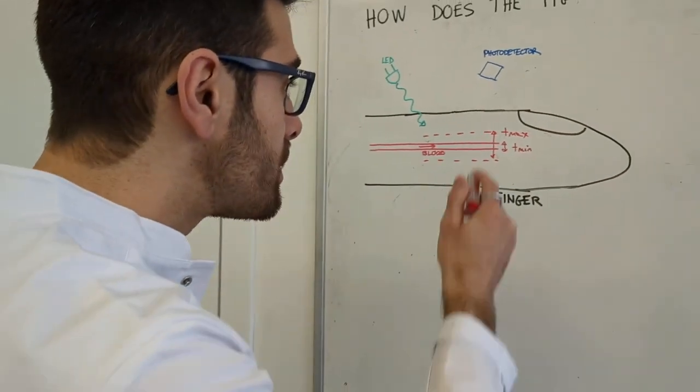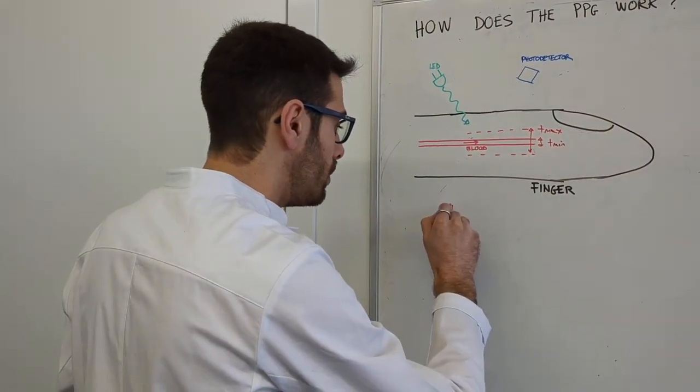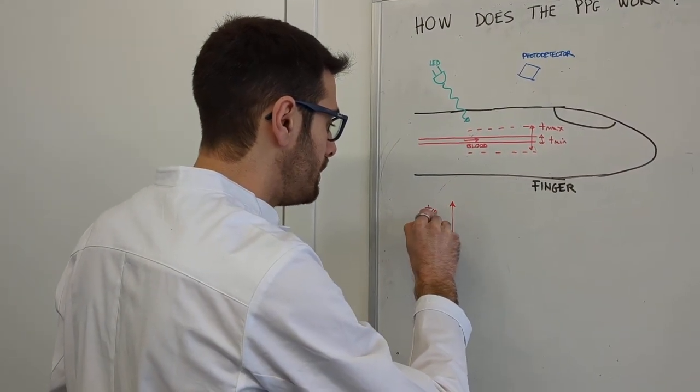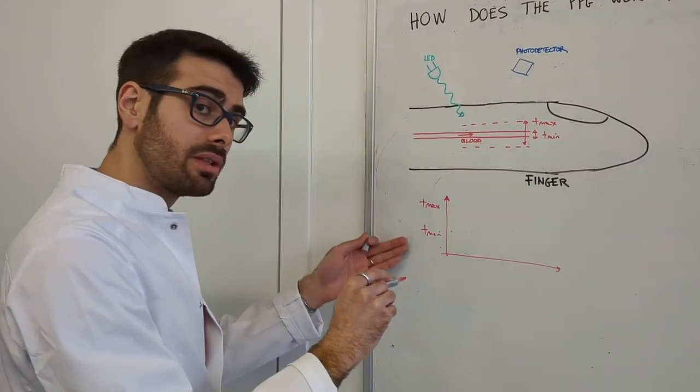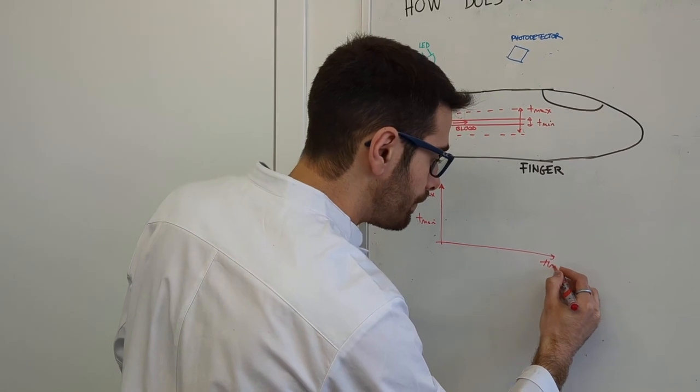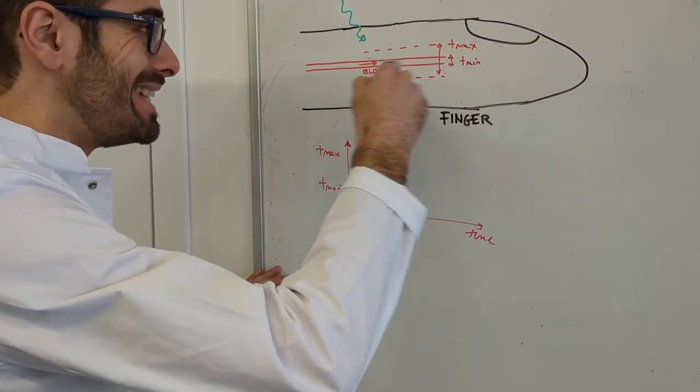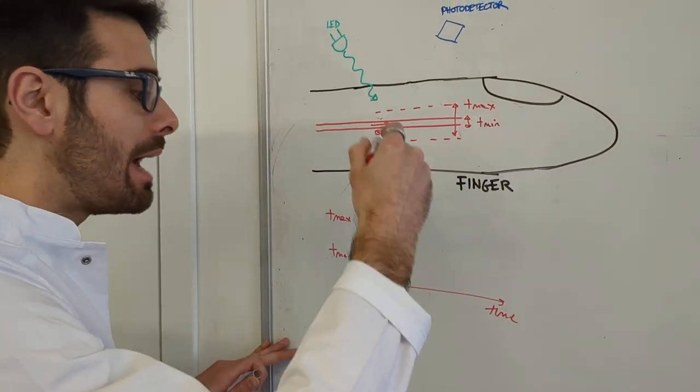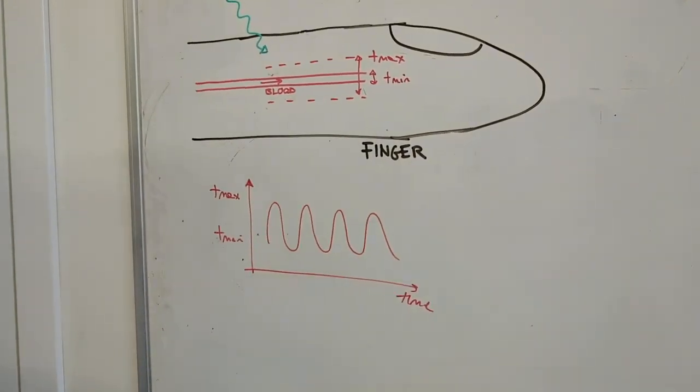If we display this over time, we can have T-max here, T-min here, which is maximum thickness and minimum thickness, and this is the time. In phase with the heart pumping, this diameter will be following an AC response, an oscillating response.